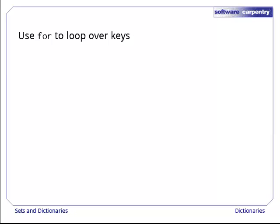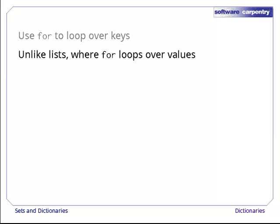Finally, we can loop over the keys in a dictionary using for. This is slightly different from looping over a list. When we loop over a dictionary, we get the keys, which we can then use to look up the values. When we loop over a list, we get its values right away, since its keys are just the integers 0, 1, and so on, which aren't usually very interesting.